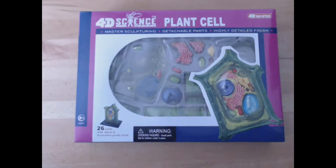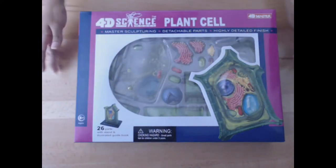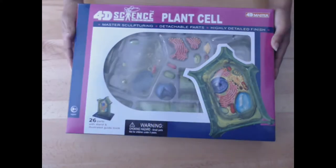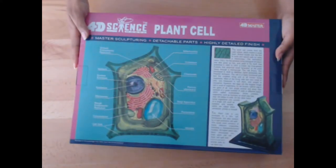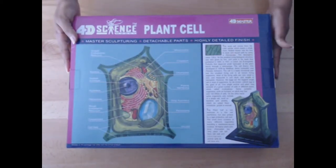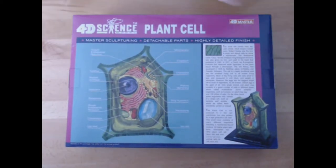Amazing new time zone and reality everyone. My name is Vel here at ScienceAway, and today we are assembling the 4D Vision Science Series Plant Cell. This set has 26 pieces, and as usual you can time yourself. Beginner is 16 minutes, average is 13 minutes, and advanced is 9 minutes.